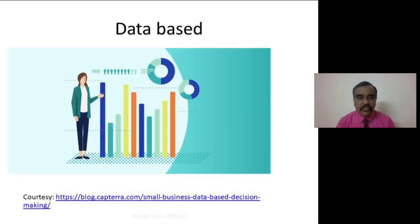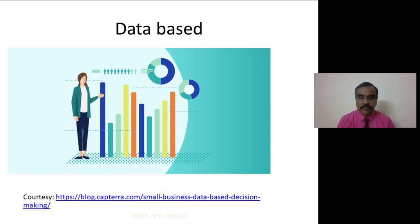Research should be based on data. Data is nothing but information. The information can be obtained in qualitative form or quantitative form. Quantitative form is in the form of numbers, whereas qualitative form is in the form of words. It can be converted into quantitative form for statistical analysis. The data should be collected in a scientific manner using standardized testing procedures, analyzed using proper statistics to derive the answer for your research question.